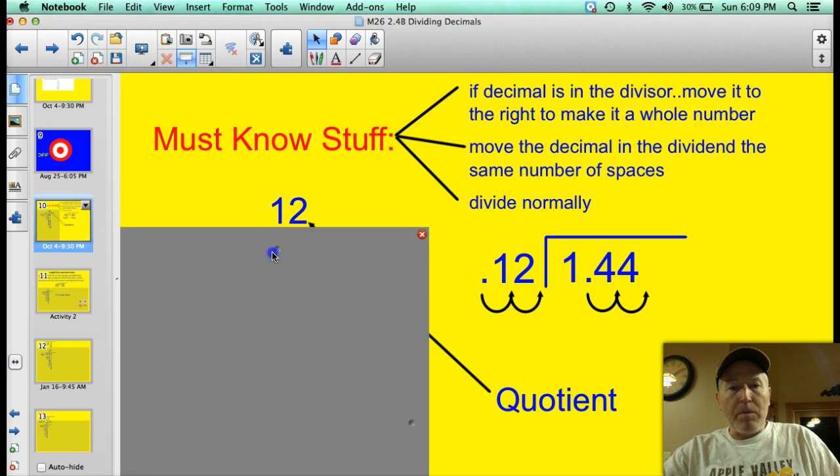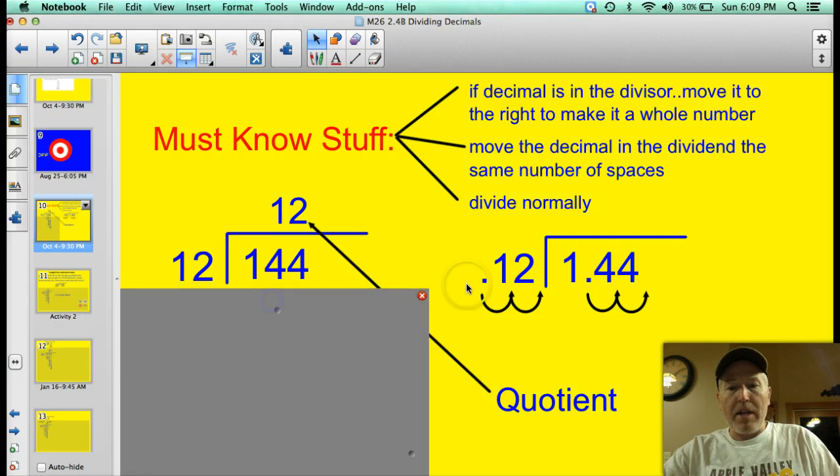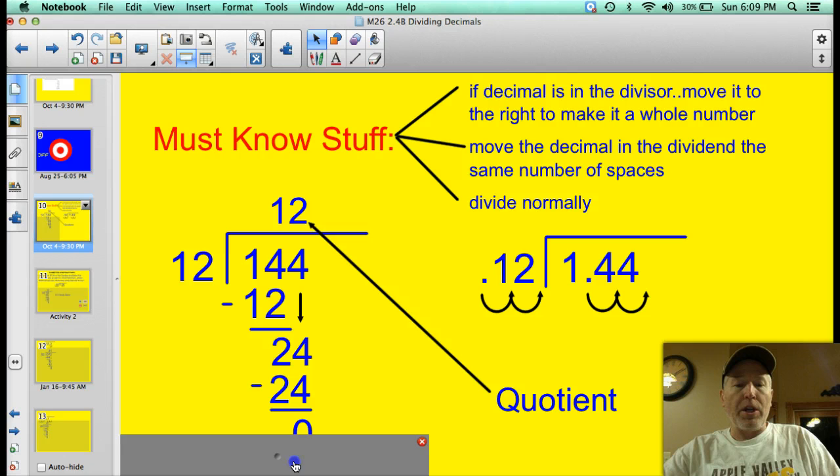So moving the decimal two places, I've created a new problem. Instead of 0.12 divided by 1.44, I am now dividing 12 by 144, which of course you know is 12, but I've showed my work here.